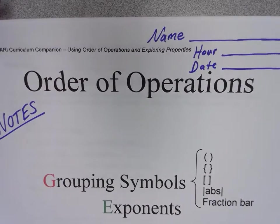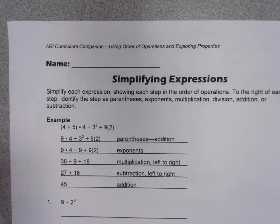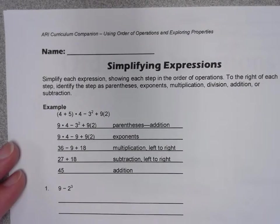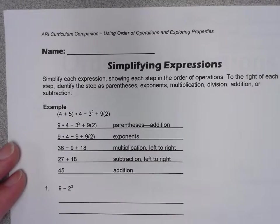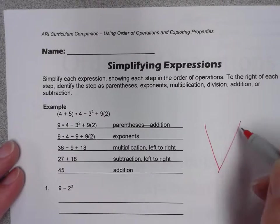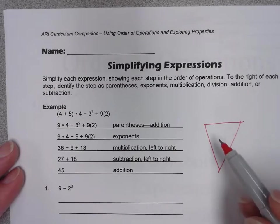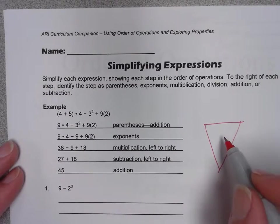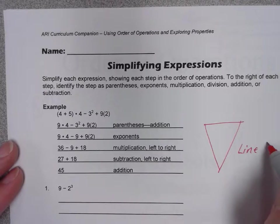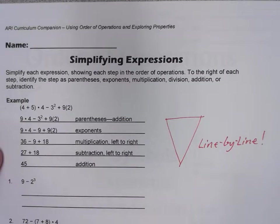Turn your paper to the next page — we want to practice some simplifying of expressions and apply the rules we just looked at on the front page. I want you to notice something: if you do a nice job with your simplifying, you'll always end up with what I call pizza — it kind of looks like a pizza slice. Some people call it a cone or an inverted triangle. Whatever you call it, this is a nice indicator of line-by-line work, and it's required — no shortcuts. We use line-by-line work to cut down on errors when problems get more complex.